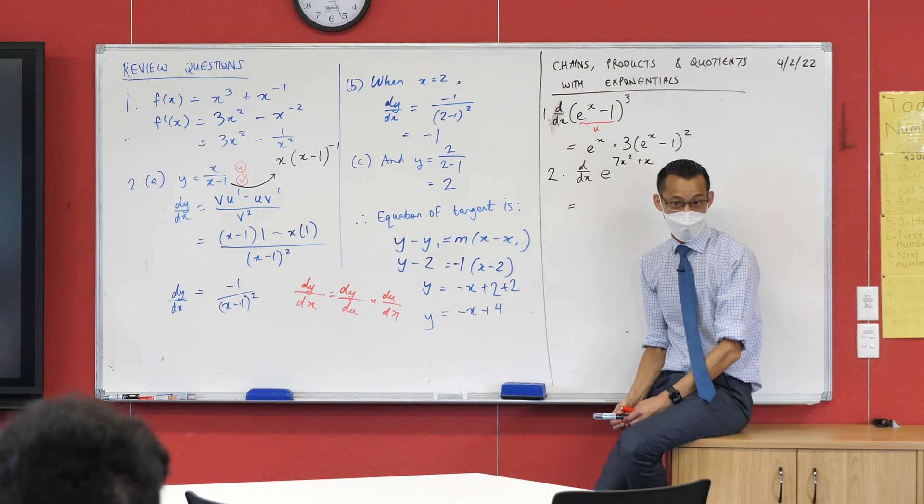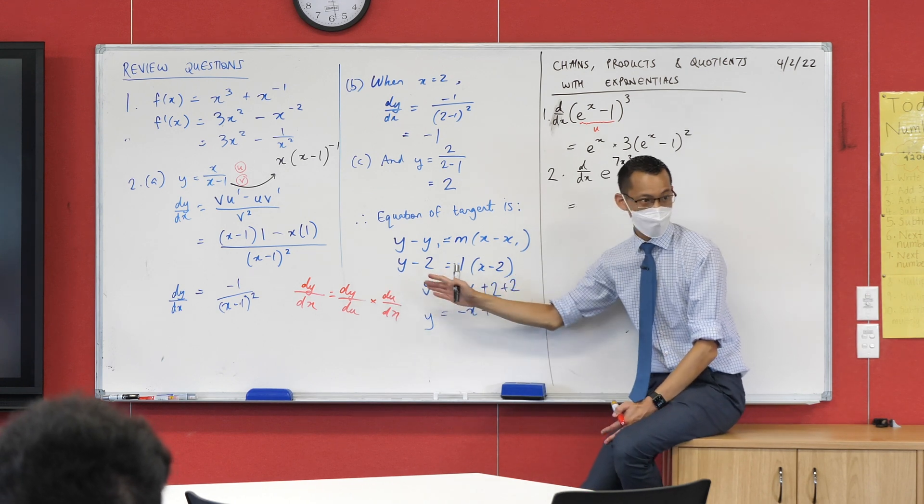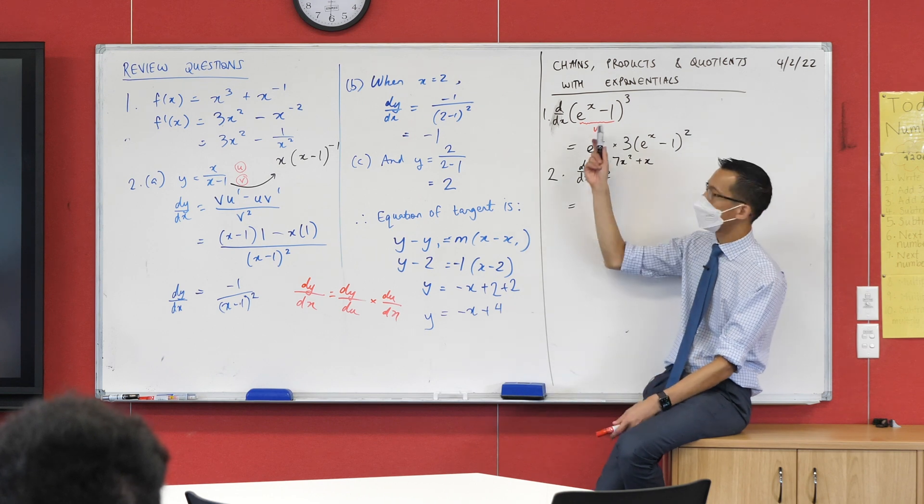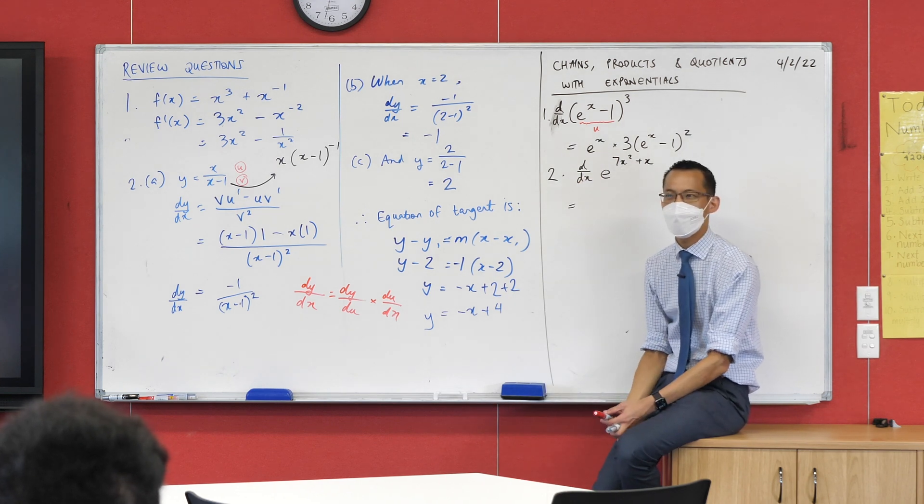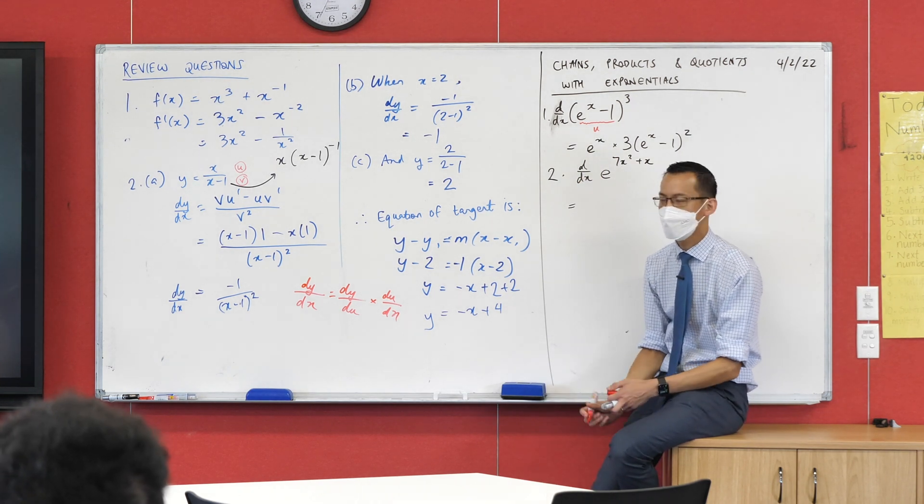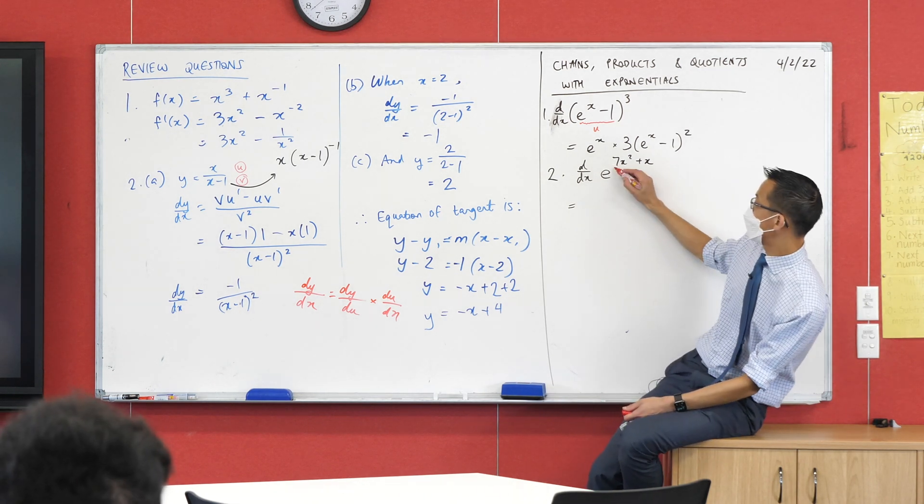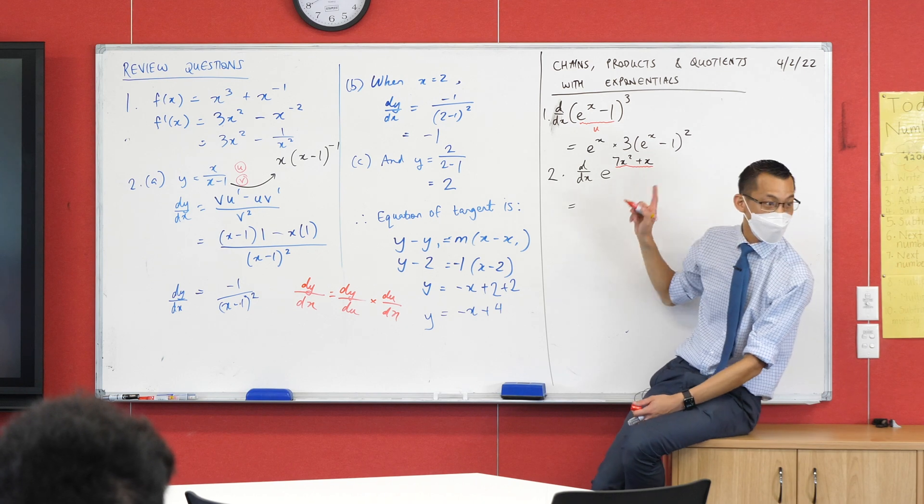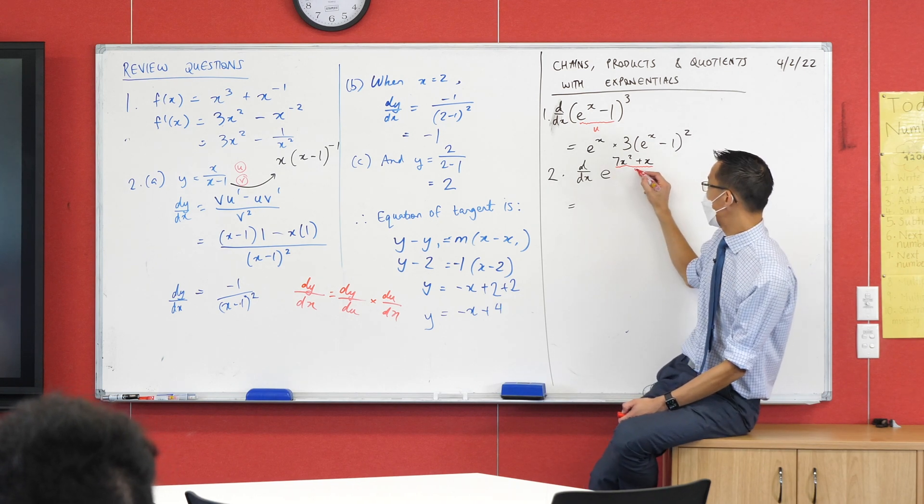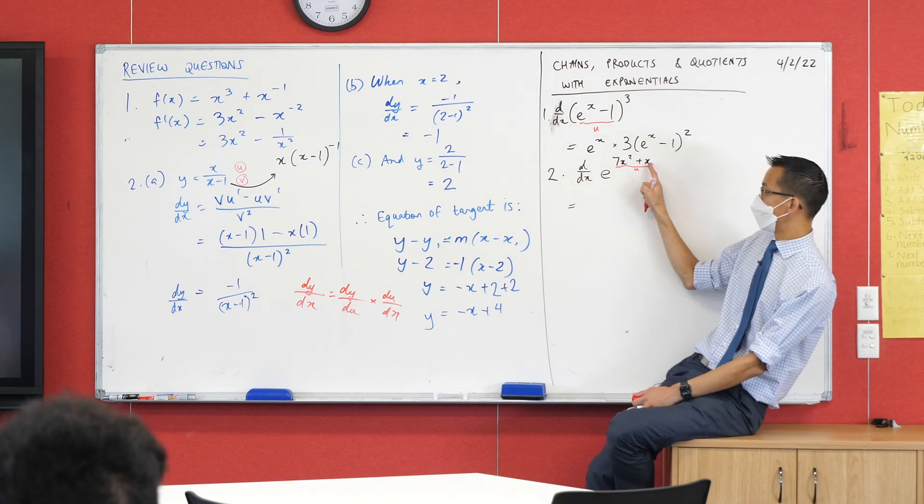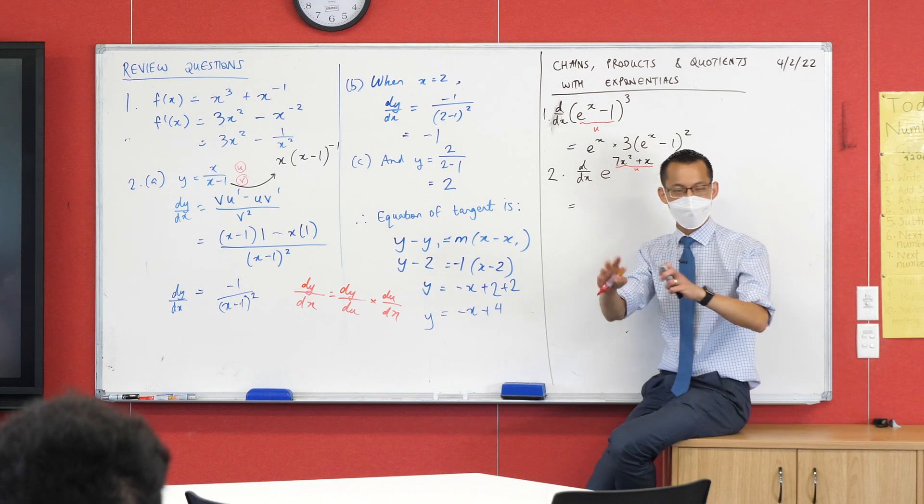Let's see if we can do this again without writing our long notation. Again, I'm looking for a u. What might be the u in this case? Yeah, fantastic, Josh. It's that 7x squared plus x—all that stuff in the index. Again, it's a function of a function, so you're just trying to identify the whole piece.